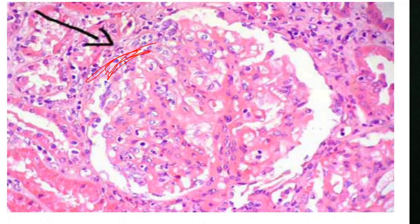Another important finding visible on light microscopy is that tubules might contain red blood cells (RBCs).